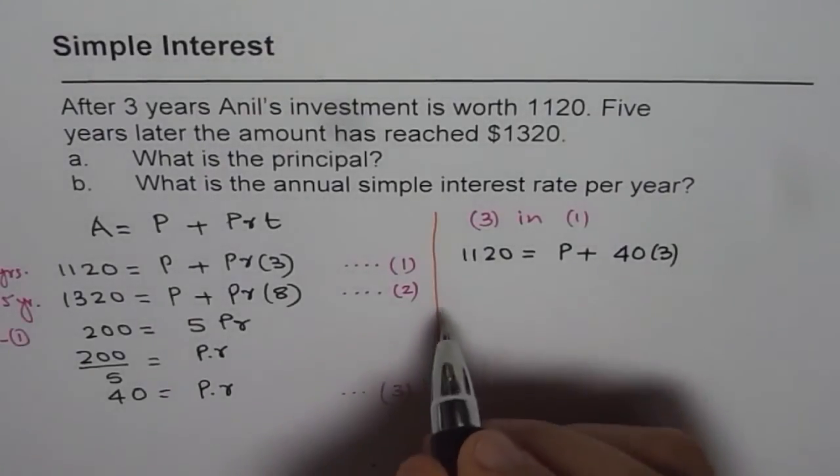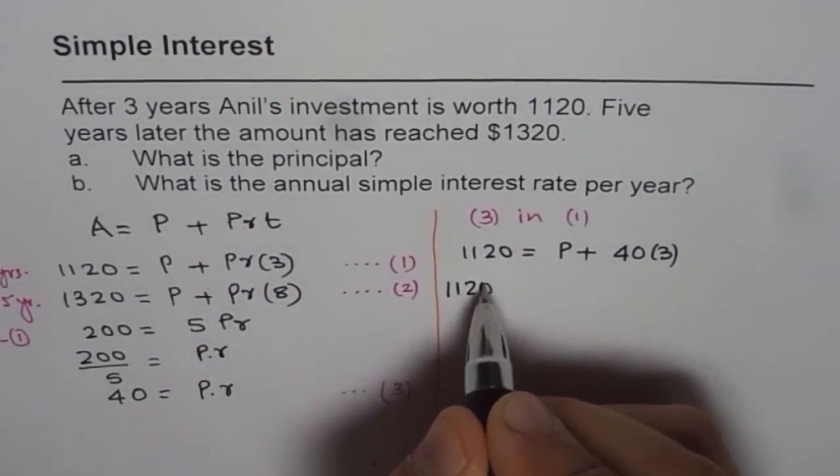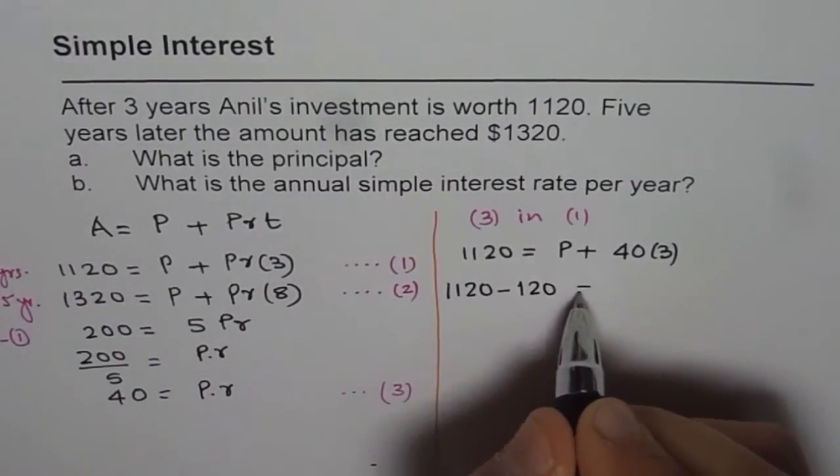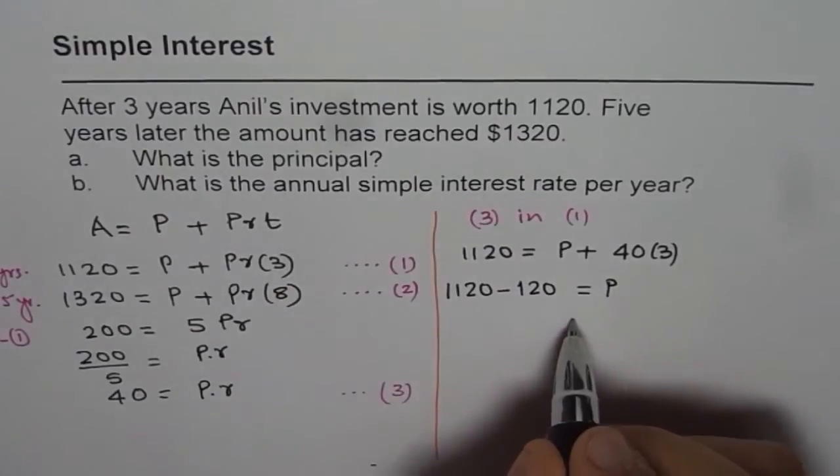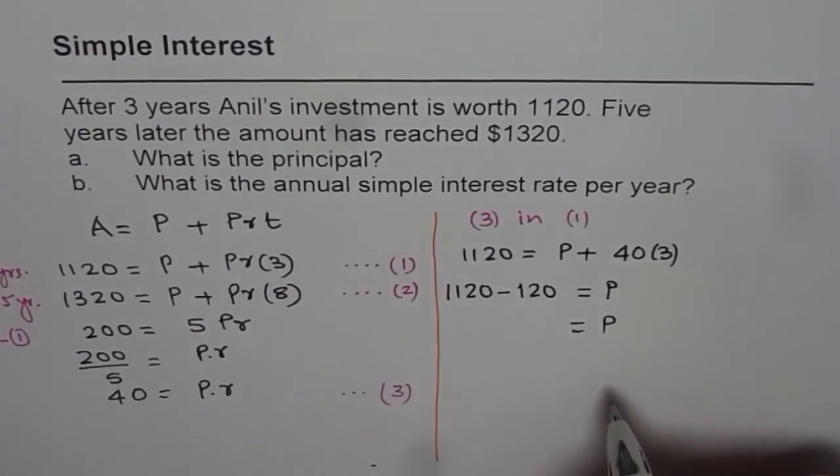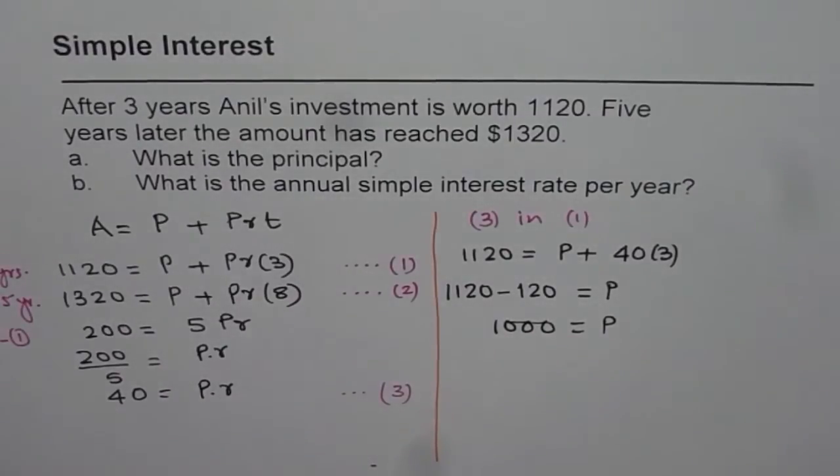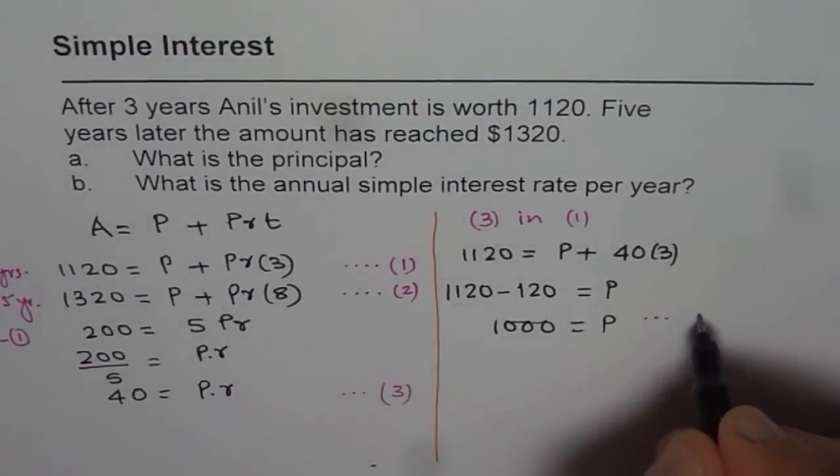40 times three is 120. So we can bring it on the left side. 1120 minus 40 times three, which is 120, equals P. And from here we can find what principle is. Principle is $1000. So you got the value of $1000. So you call this as our equation number four.